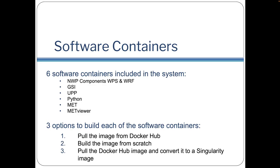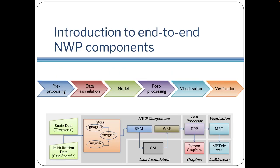In the following sections of the online tutorial, we will detail how to build the software containers with each of these three options, but first let's talk about the components of the NWP system. All of the steps and components of an end-to-end NWP system are shown here. Each dark gray box corresponds to an individual container used to run the programs for that step in the NWP workflow.